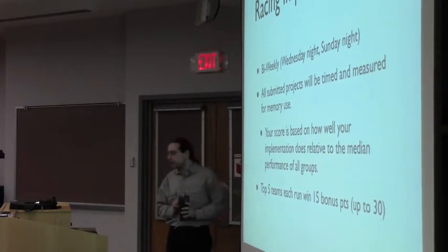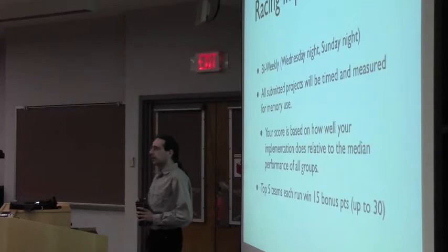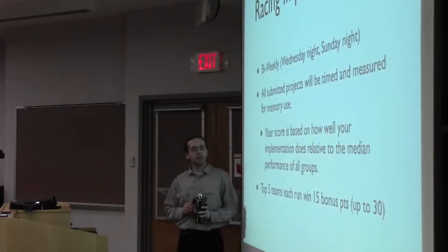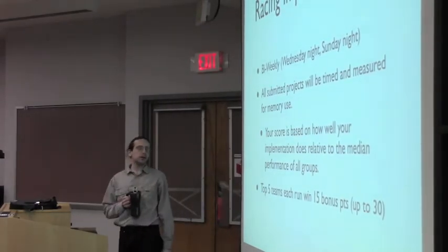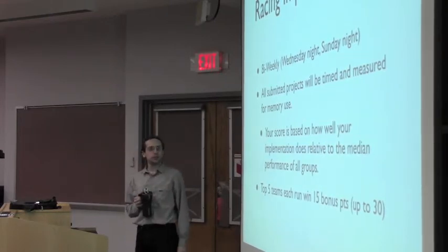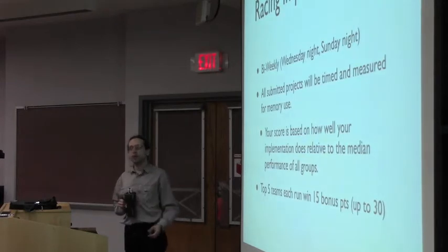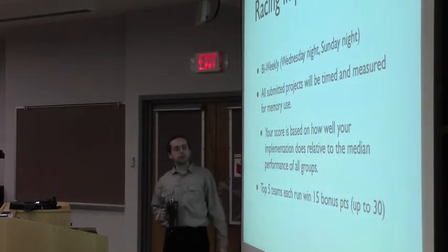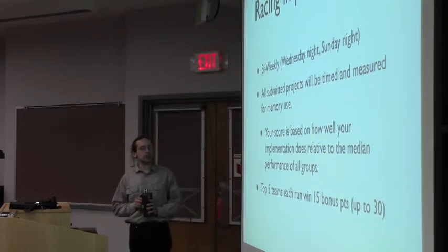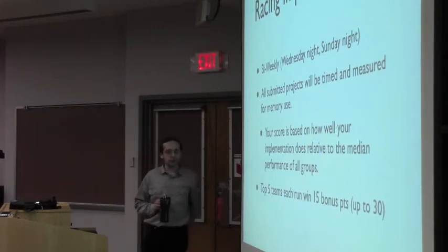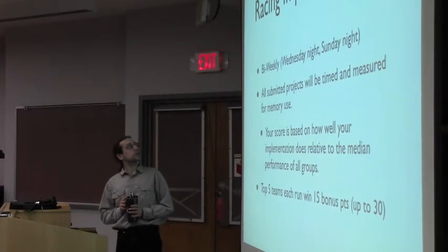The second extra credit is a bi-weekly face-off between teams. Starting a week from this coming Wednesday, anyone who has submitted will be raced against everyone else. There will be two cutoffs: Wednesday night and Sunday night at exactly midnight. The score is based on both how fast your implementation is and how little memory it uses. The top five teams will receive 15 bonus points, up to a total bonus of 30 points.